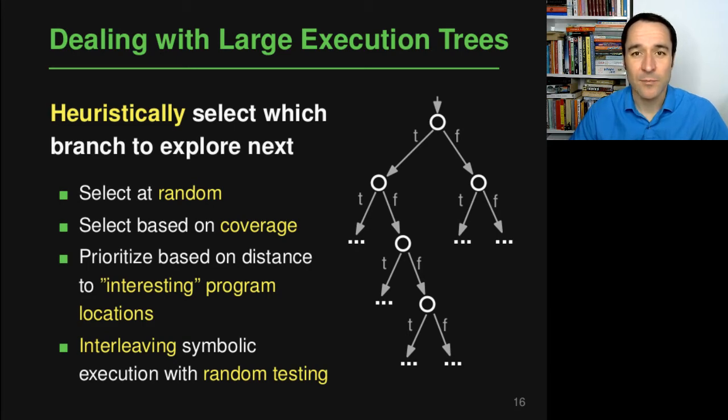And now the heuristic to choose which branch to explore next can be many different things. So the most simple one is to just select one at random. Another option is to do this selection based on coverage. So if you have some reason to believe that if you would explore this branch more you would probably cover more code, maybe because you've never executed that branch, then this is maybe a good branch to explore next.